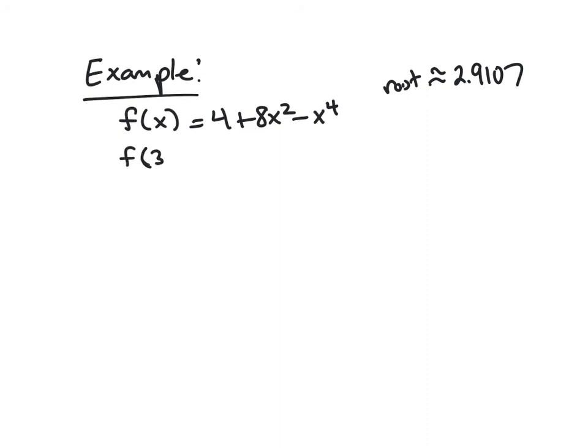So maybe I plug in 3, and I see what happens. And so I get 4 plus 72 minus 81, and so I get negative 5, which, I mean, given that it's to the fourth power, negative 5 is not that far off from 0. So let's just say our guess is 3.